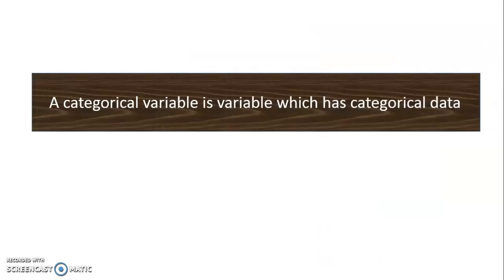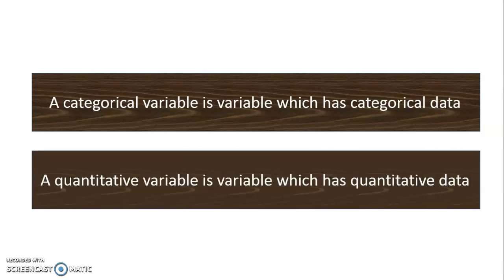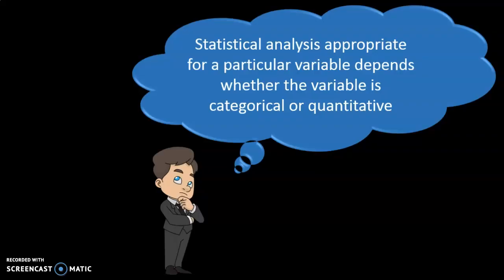When we talk about variables, a categorical variable is a variable which has categorical data, whereas a quantitative variable is a variable which has quantitative data. A variable is something which we are going to measure in our research. If the variable has categorical data we say it is a categorical variable; if it has quantitative data we say it is a quantitative variable.